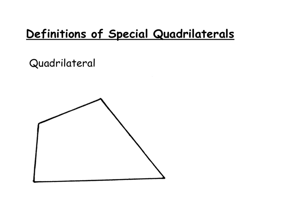In this lesson, we're going to be discussing the definitions of the different special quadrilaterals. Over the next couple of classes, you'll be investigating properties of different special quadrilaterals, and this lesson is just going to give you a sense of how they're all defined. As a refresher, a quadrilateral is simply just a polygon that has four sides.